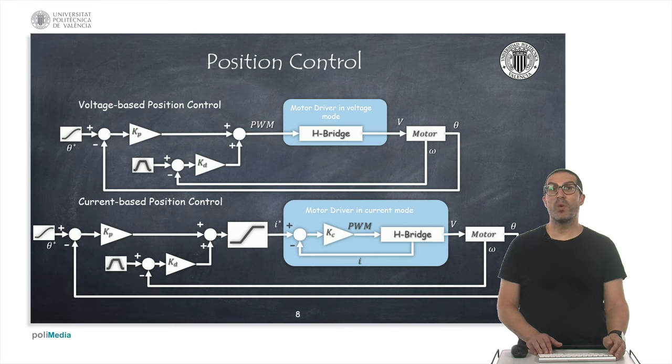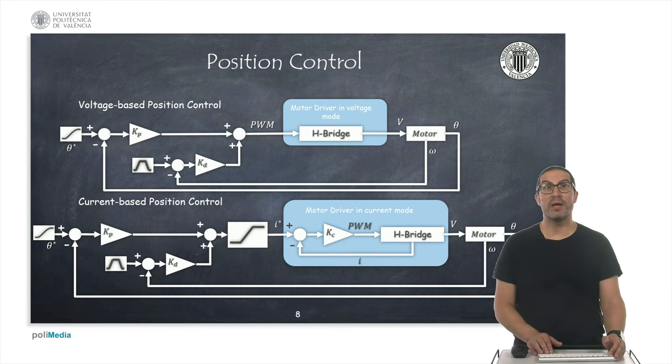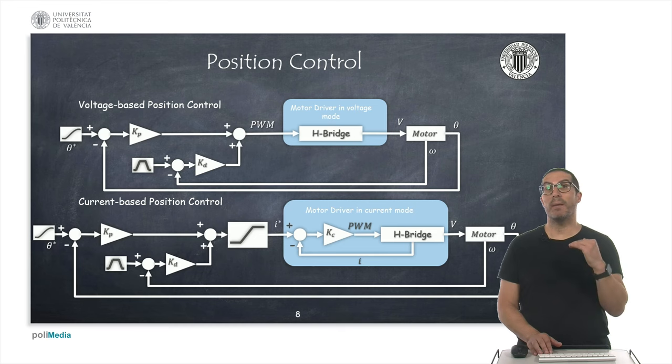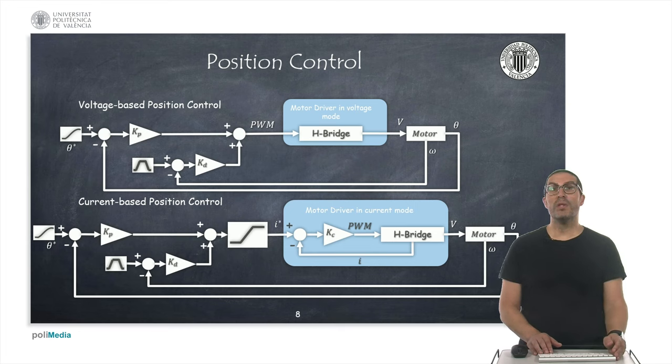Motor drivers can control motors in voltage mode or current mode, although the most basic mode is the voltage mode. In this mode a PD controller can be used to control the position, and the controller must generate a PWM signal that we will apply to the motor through the motor driver. For controlling the position of a motor in current mode, the controller must generate a reference current, not in this case directly the PWM signal, because this signal is internally generated by a feedback loop in which we measure the current of the motor.